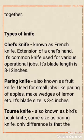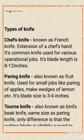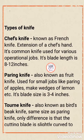Now the types of knives. The first one is the chef knife. The chef knife is also known as the French knife and it is an extension of a chef's toolkit. It is the most common knife used for various operational jobs such as chopping and slicing. The length of this blade is usually 8 to 12 inches and it is used for multi-purpose use.